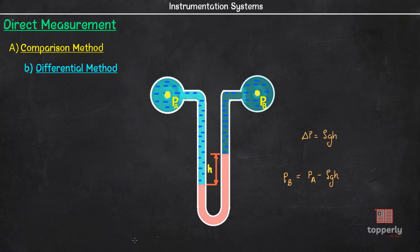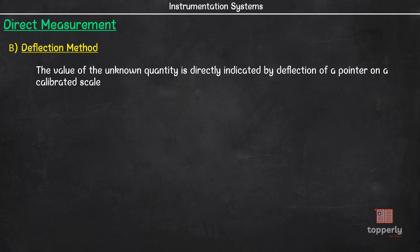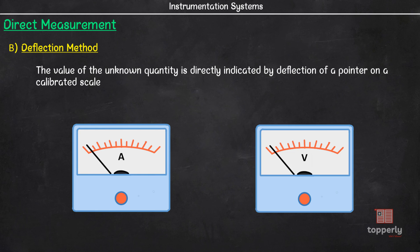Now the next type is deflection method of measurement. Here, the value of the unknown quantity is indicated by the deflection of a pointer on a calibrated scale. Some examples are ammeters, voltmeters, wattmeters, etc. Since this method of measurement is self-explanatory, I am not going into the details of it.